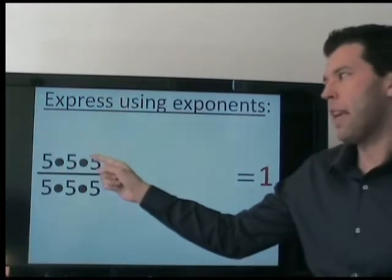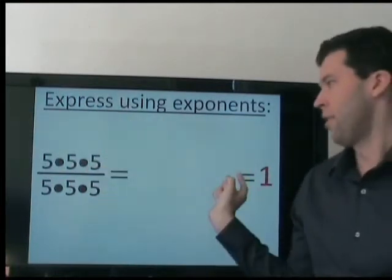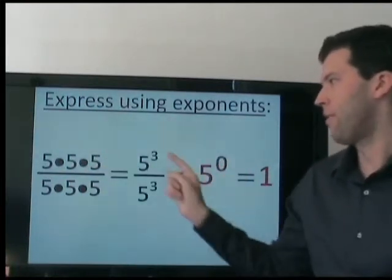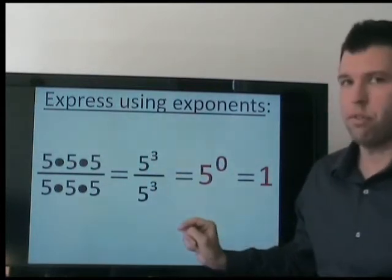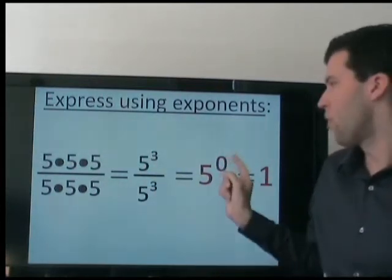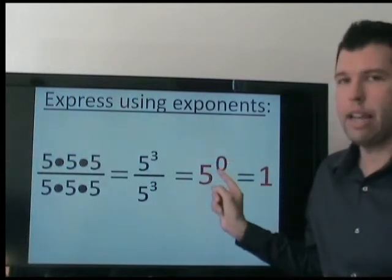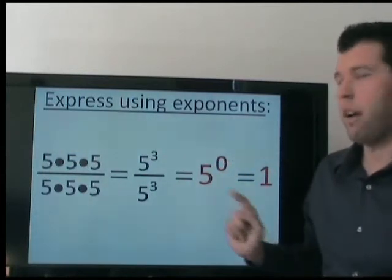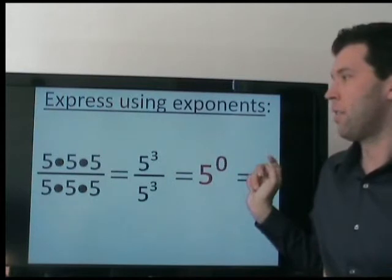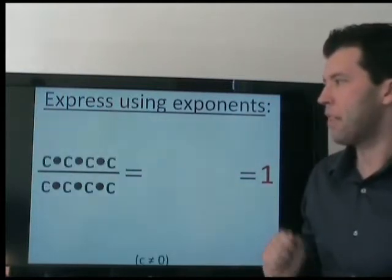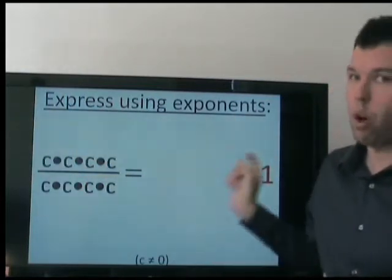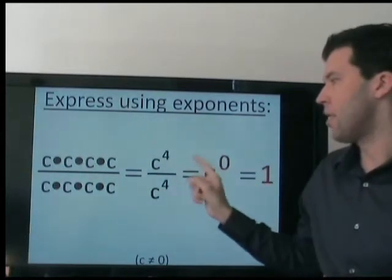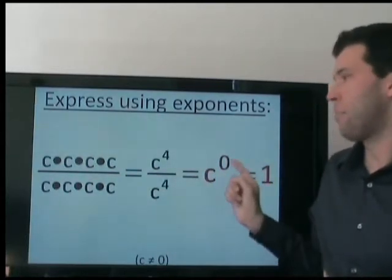Well, anything divided by itself is 1. Using exponents, it's 5 to the 3rd over 5 to the 3rd. And when these 5s cancel, we have no more 5s being multiplied or divided. So remember, 5 to the 0 equals 1, not 0. Same idea — anything divided by itself is 1. When the c's cancel, we have c to the power of 0, which is 1.